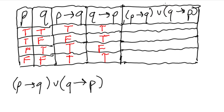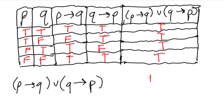Applying the OR to the columns P→Q and Q→P: row 1 — at least one true, so true; row 2 — at least one true, so true; row 3 — at least one true, so true; row 4 — both true, so true. All values are true, meaning 'P implies Q or Q implies P' is again a tautology.